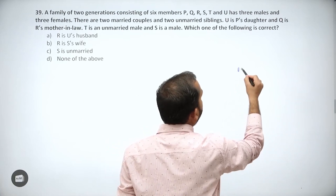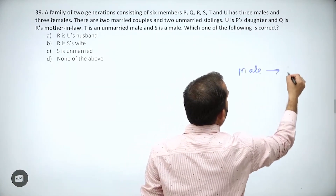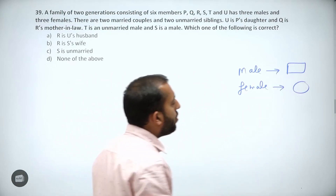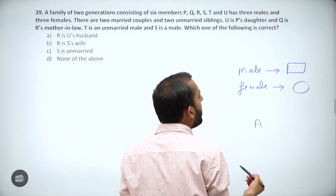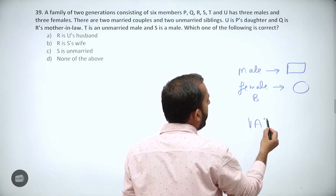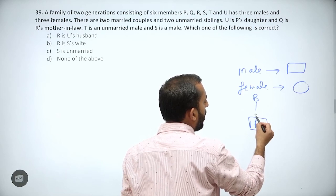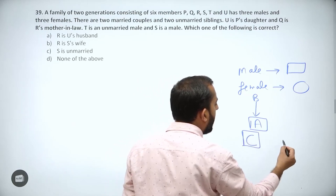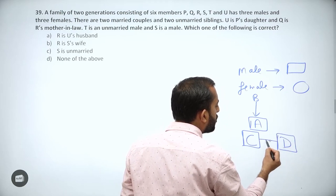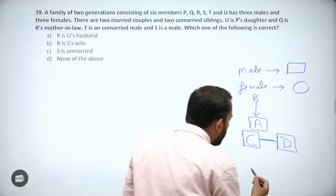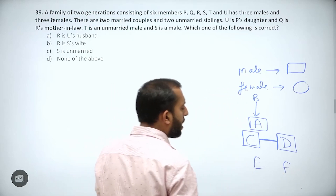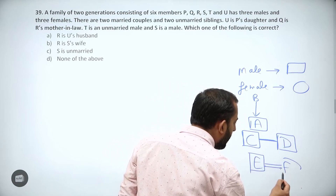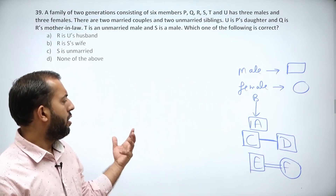We know that a male is represented with a letter inside a square box and a female with a letter inside a circle. If A is the son of B, A is inside a square with a downward arrow. If C and D are brothers, both are in square boxes joined with a single line. If E and F are husband and wife, they are joined with a double arrow.